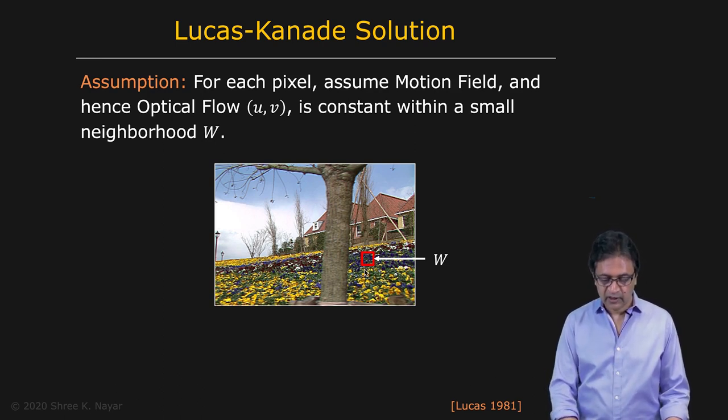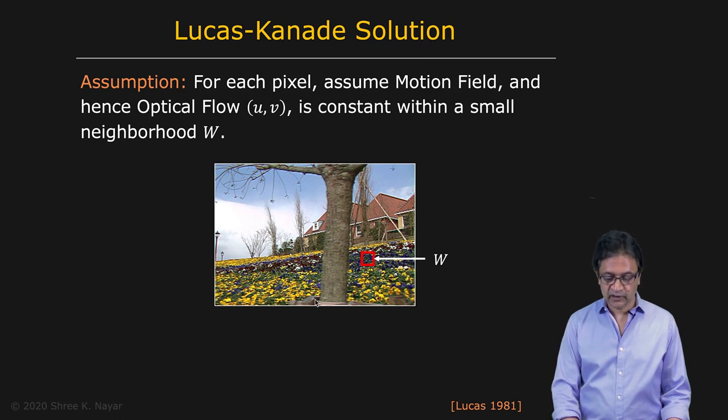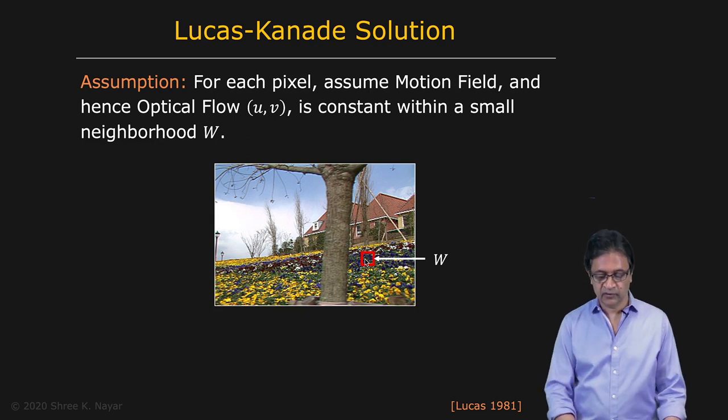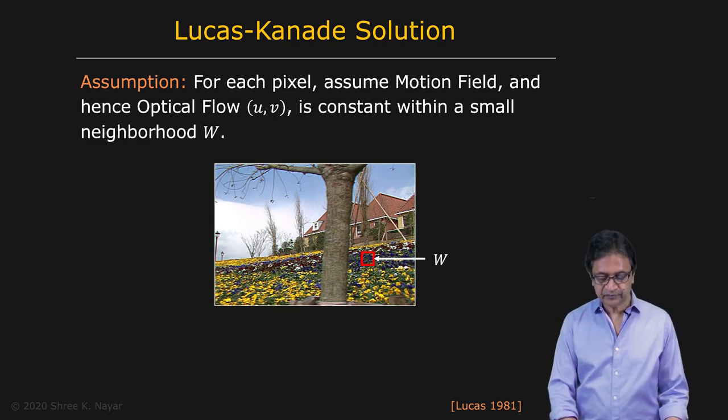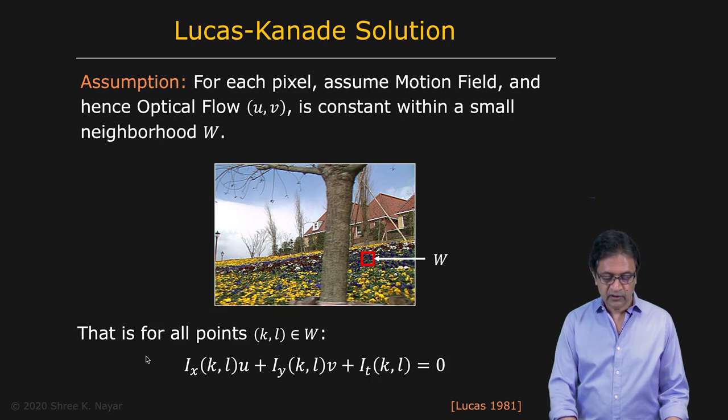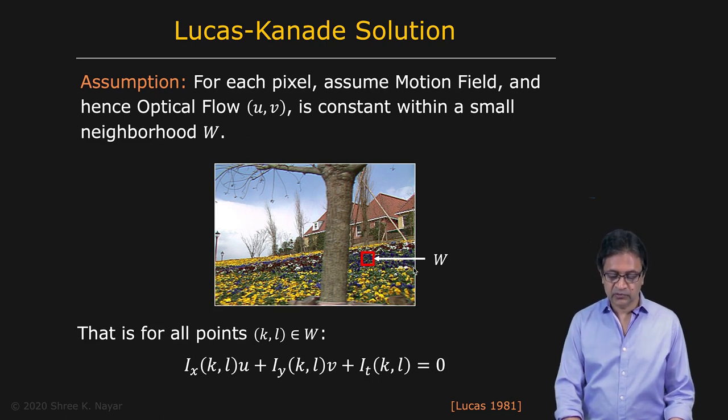So let's say that we have a patch here in the image, a small patch, the smaller the better. We're going to assume that all the points within this patch are moving the same way in the image. In other words, they produce the same motion field and hence the same optical flow in the image. So if that's the case, for each point within this window,